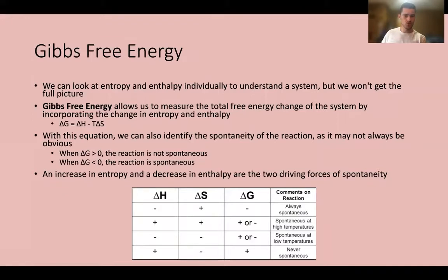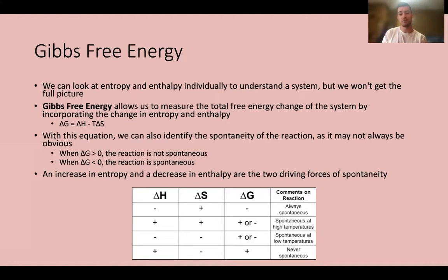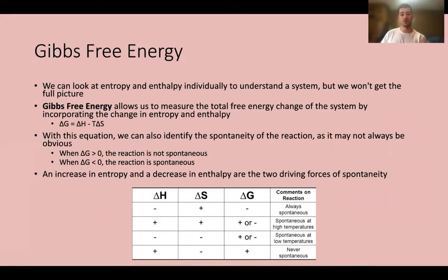We can look at entropy and enthalpy individually, but we won't get the full picture. When reactions proceed, we want to know if they're favorable — that is, spontaneous. A spontaneous reaction will proceed to equilibrium on its own. Gibbs free energy lets us calculate this quantitatively by incorporating both the change in entropy and enthalpy.